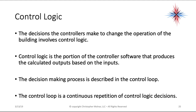Control logic is the decision the controllers make to change the operation of the building. It is the portion of the controller's software that produces calculated outputs based on inputs. The control logic uses this decision-making process in a control loop — a continuous repetition of control logic decisions. Just because it checks sensor temperature once doesn't mean it stops; it's continuous.